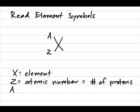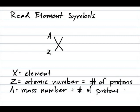And then A is the mass number. And the mass number, it's very important to remember this, the mass number tells you the number of protons and the neutrons. So it's the total number of protons plus neutrons.